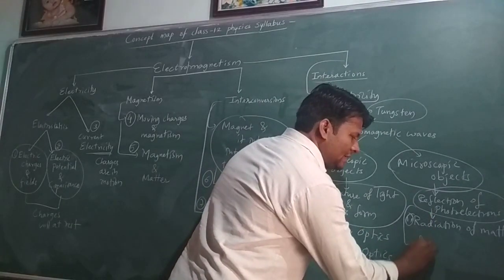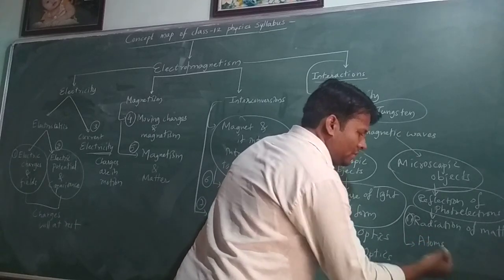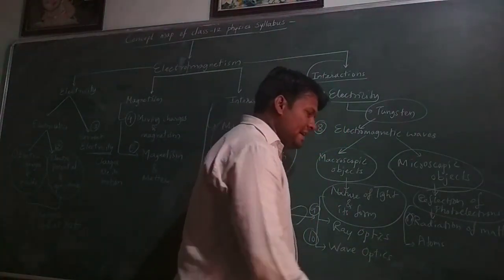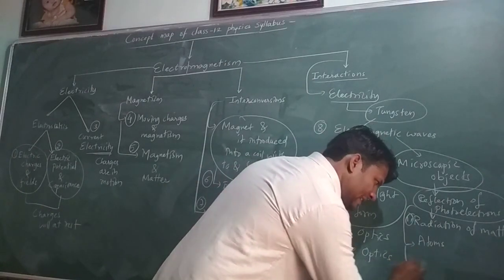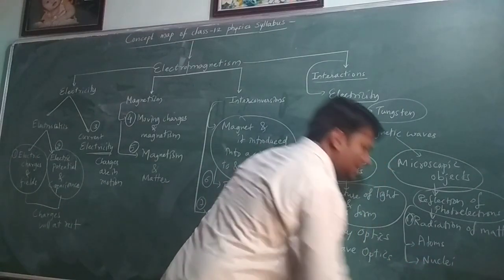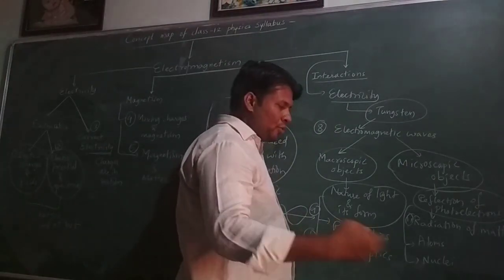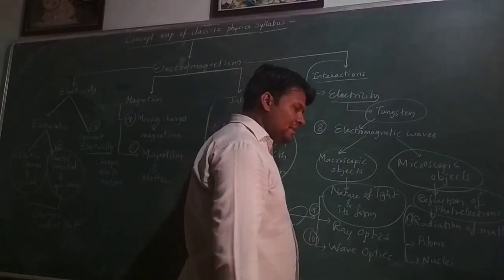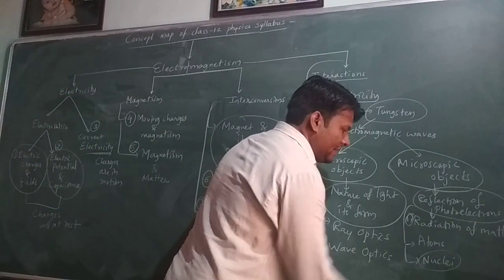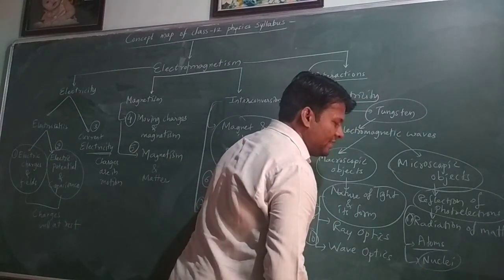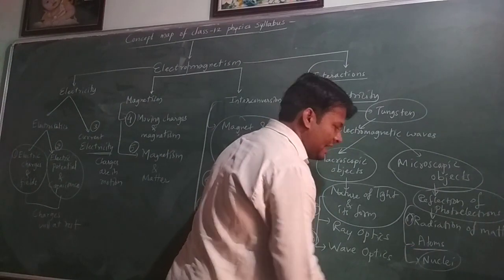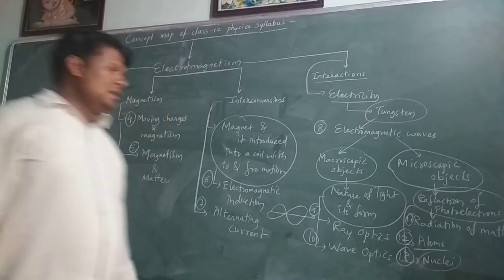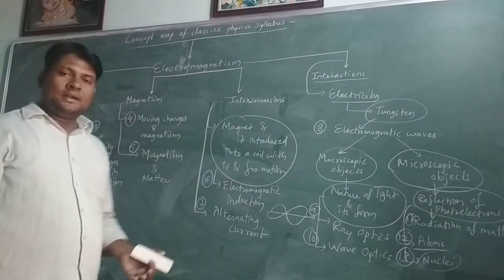When electromagnetic waves interact with atoms, they show the internal symmetry of atoms as well as subatomic particle sizes — like the proton size, electron size, the distance between nuclei and electrons, and the radius of the atom. Atoms is the twelfth chapter and Nuclei is the thirteenth chapter. So 13 chapters can be drawn from the single concept of electromagnetism.